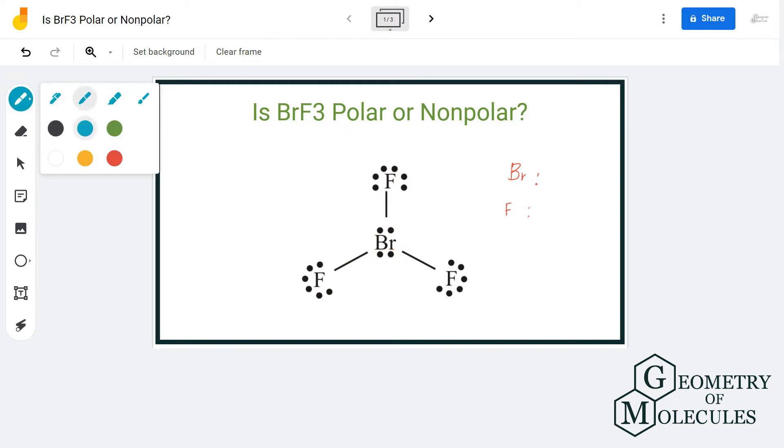The electronegativity of fluorine is much higher than bromine, as it has an electronegativity value of 3.98 whereas for bromine it's 2.96. So the difference is more than 0.5, which makes this bond polar. Apart from that, there are two non-bonding pairs of electrons on the central bromine atom.